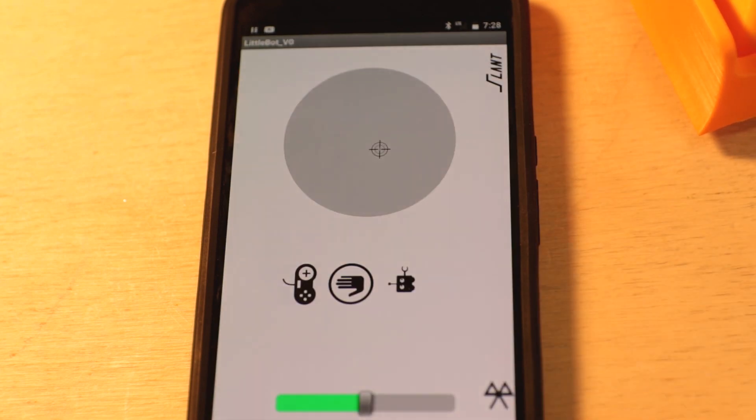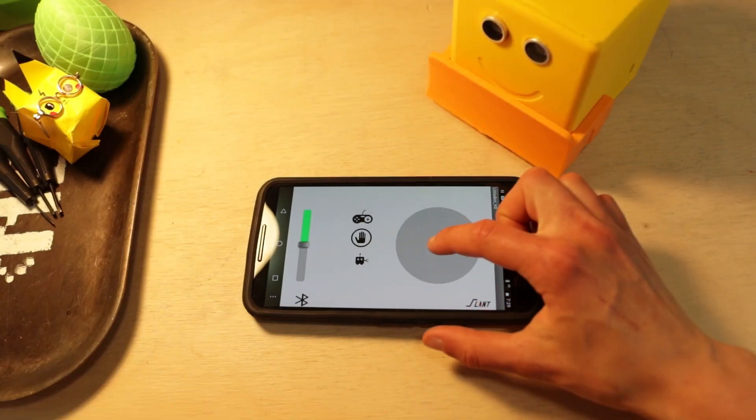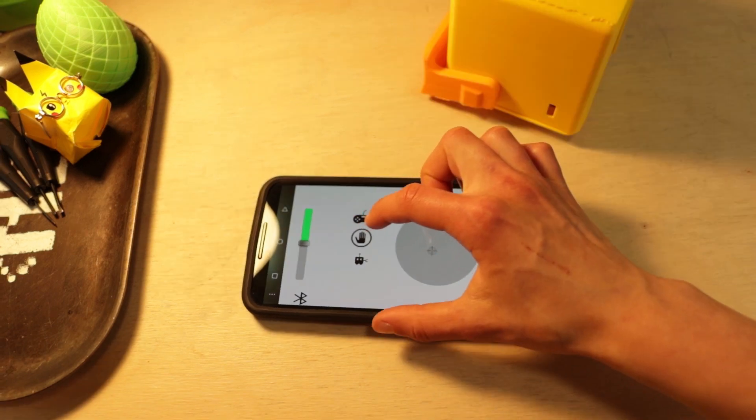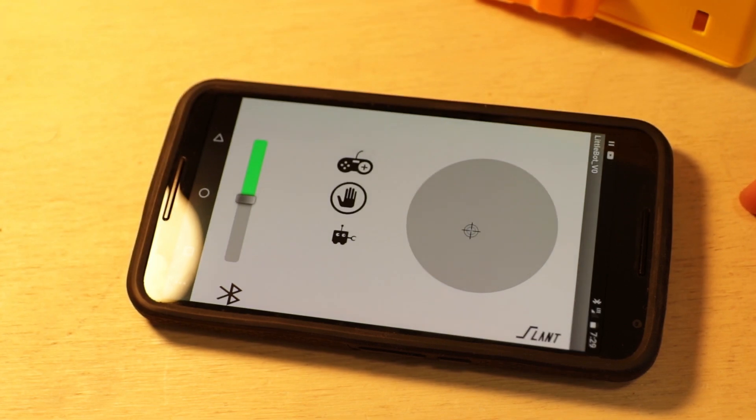Little Bot is designed to have two modes of driving: driver controlled and wander mode, where it'll drive autonomously and avoid obstacles. To put Little Bot into driver controlled or teleoperated mode, hit that controller icon. By the way, the hand icon makes Little Bot exit whatever mode it's currently in. But no matter what we've tried, the app crashes every time we try to put Little Bot into its wander mode.